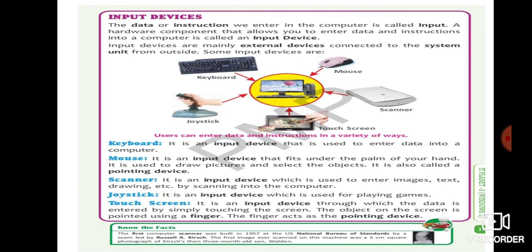First is keyboard. Keyboard is used to enter data into a computer. For entering the information we are using keyboard. Next is mouse. We use mouse to draw pictures or diagrams or to select any of the information or any options in the computer. We are using mouse and it is also known as pointing device.